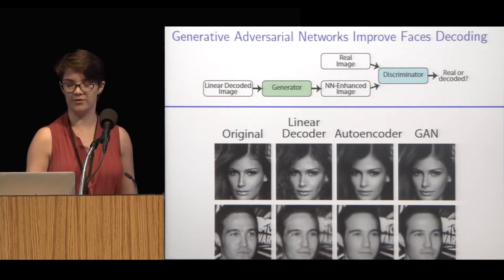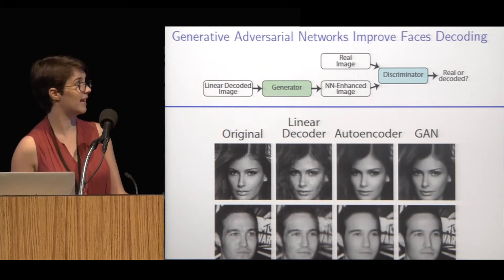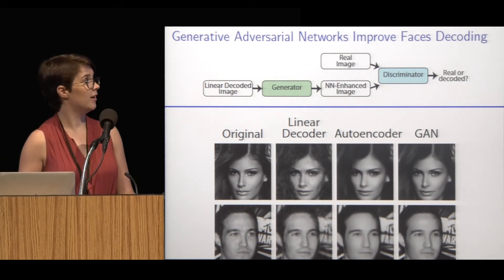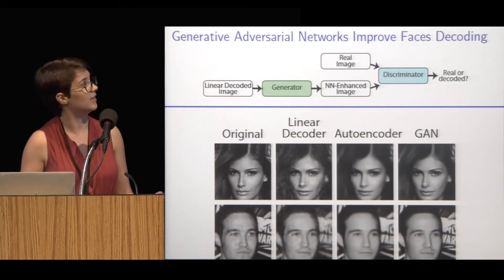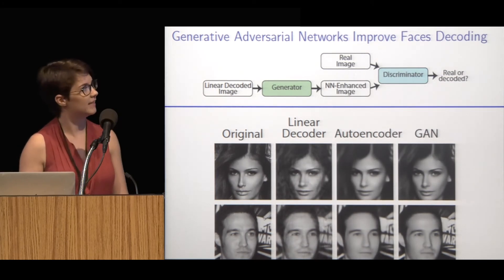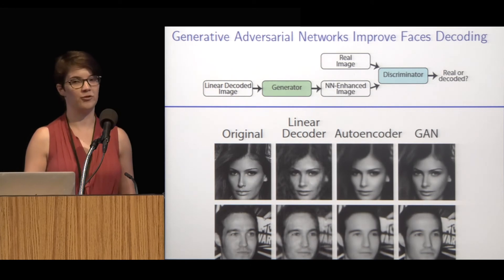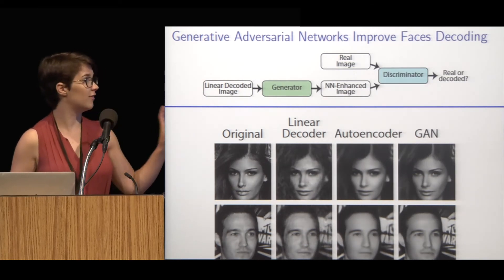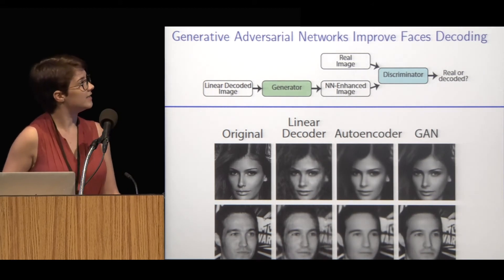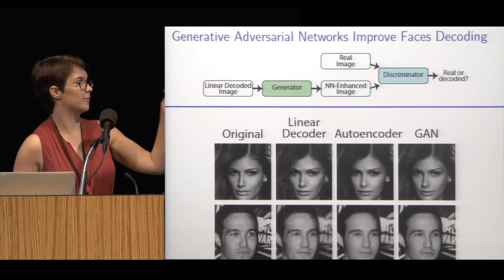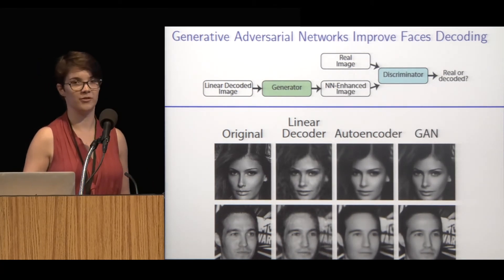We also tried out generative adversarial networks. These models consist of training a generator and a discriminator at the same time. In our case, the generator goes from the linear decoder image and enhances it, and the discriminator tries to decide whether it's a real image or a neural network enhanced image. We did see some perceptual improvements on general ImageNet, but we really saw a lot of improvement using these GANs on a specific category of human faces using the CelebA dataset. The GAN results in pretty impressively realistic-looking images — especially compared to the autoencoder, they are less overly smoothed and have more realistic texture.